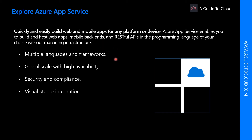Some of the key features of Azure App Service include multiple languages and frameworks. App Service has first-class support for ASP.NET, ASP.NET Core, Java, Ruby, Node.js, PHP, and Python. You can also run PowerShell and other scripts or executables as background services. For global scale and high availability, you can scale up or out manually or automatically and host your apps anywhere in Microsoft's global data center infrastructure.